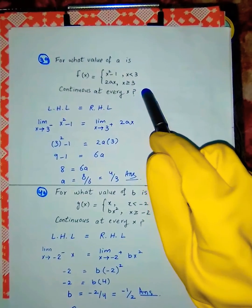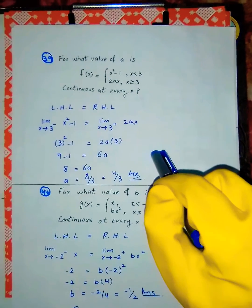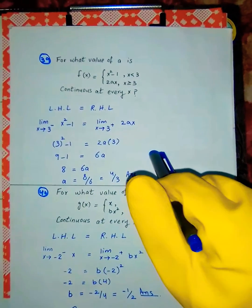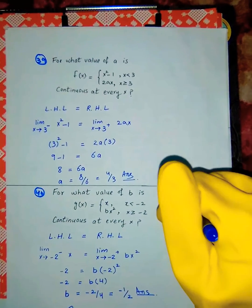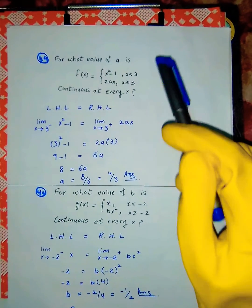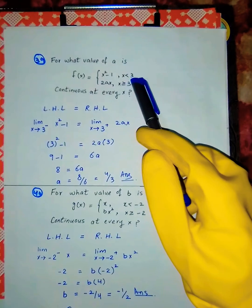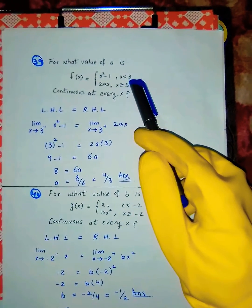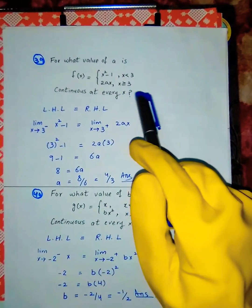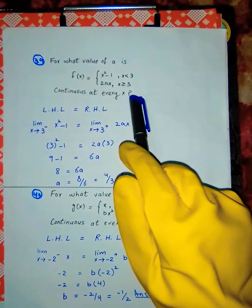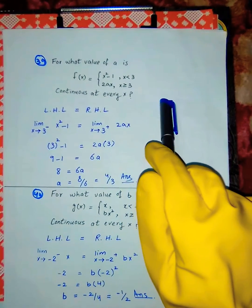We identify the right-hand limit and the left-hand limit at x = 3. When x is less than 3, we use the left-hand side expression.